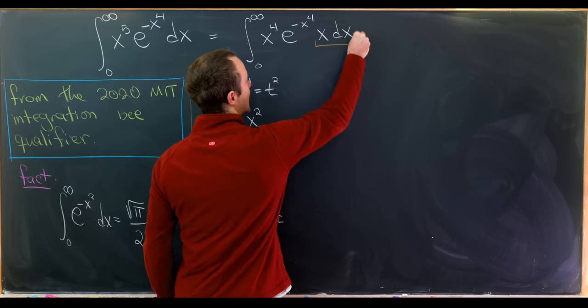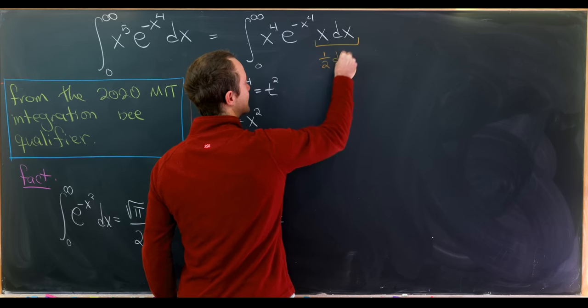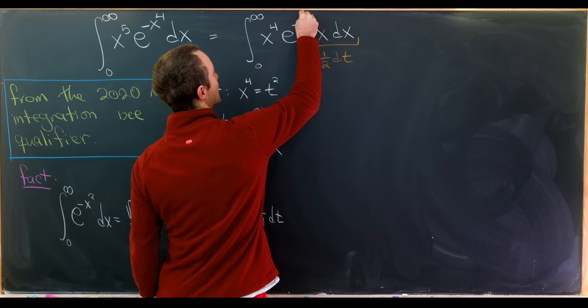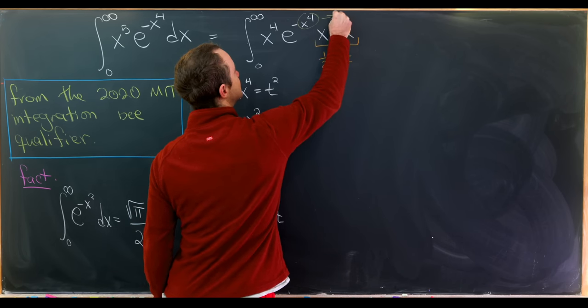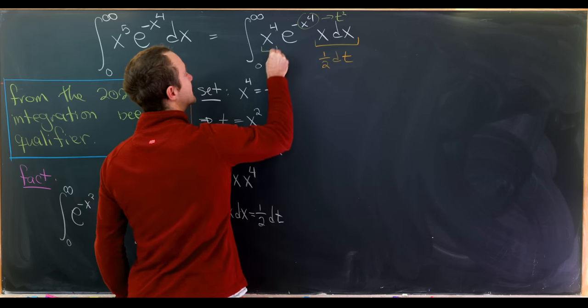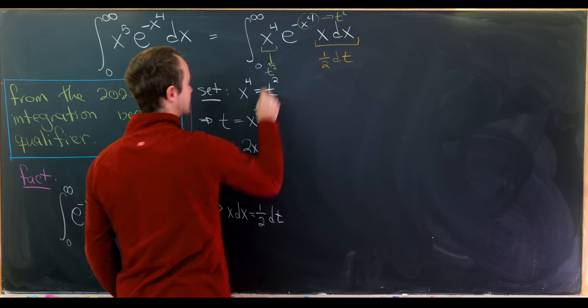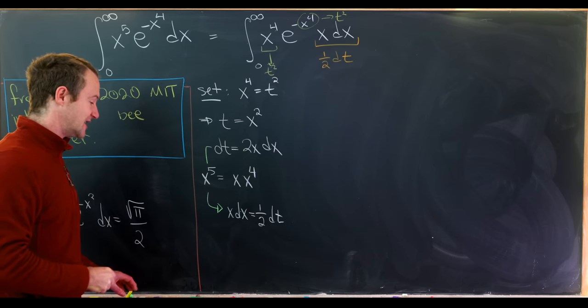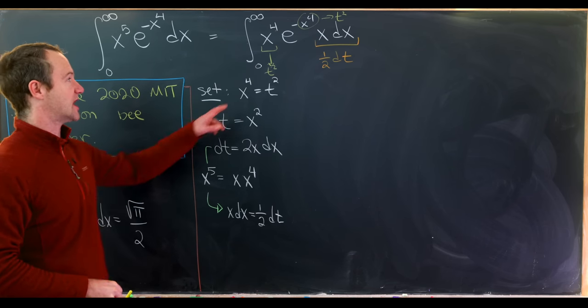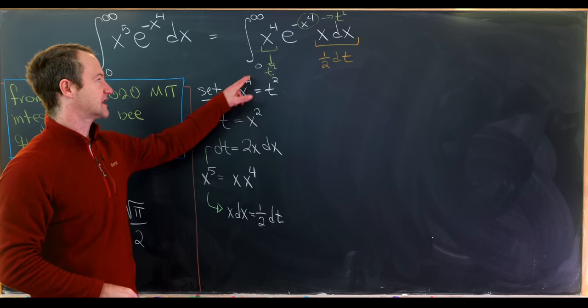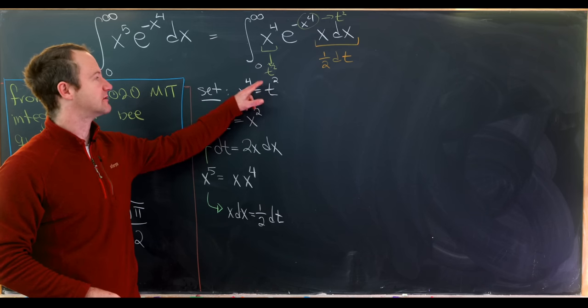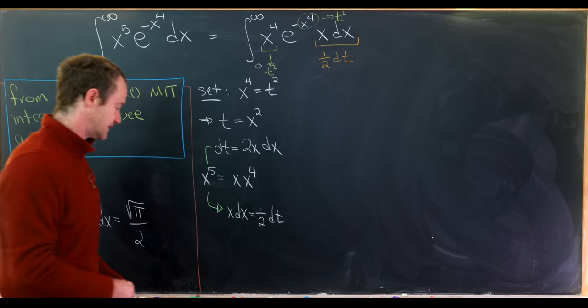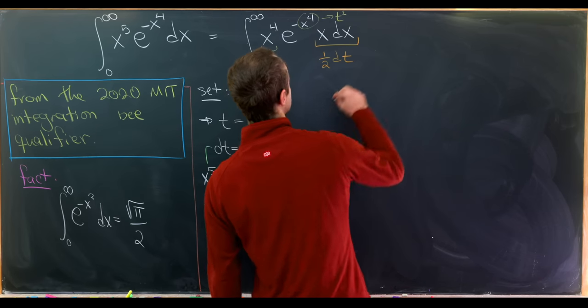So this x dx is 1 half dt. And then next up, this x to the fourth here is t squared. And this x to the fourth here is also t squared. Let's also notice that the bounds of integration in our setup don't change. That's because if x is equal to zero, t is equal to zero. And as x approaches infinity, t also approaches infinity. So that's good news.